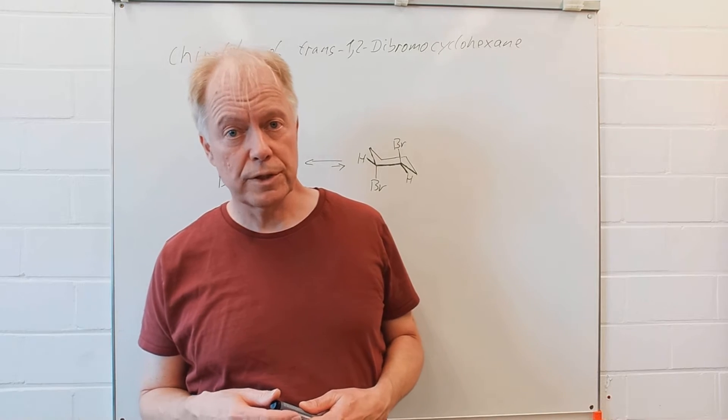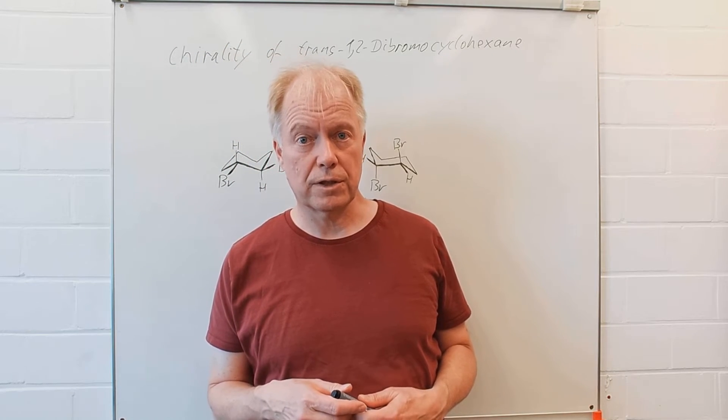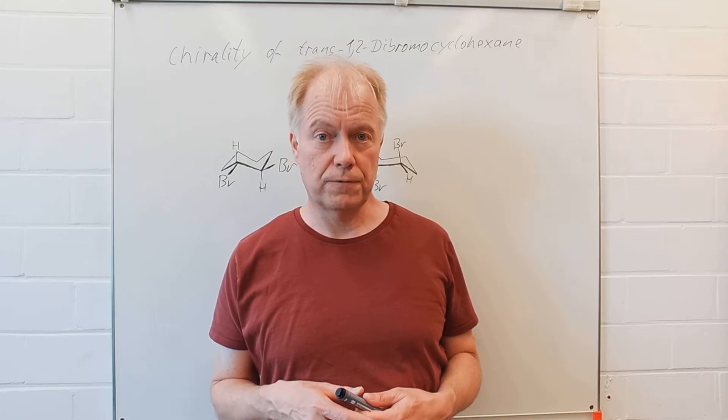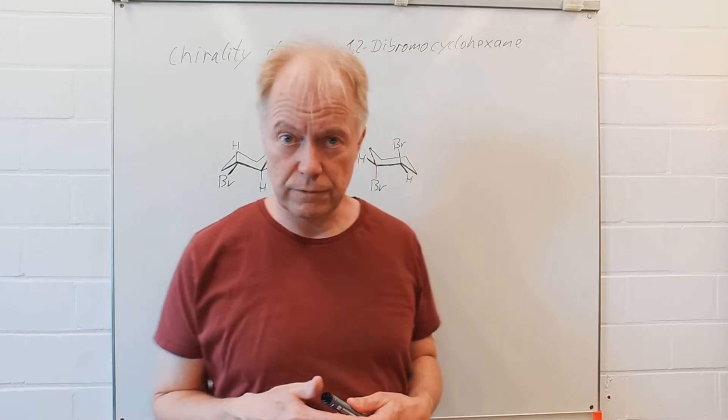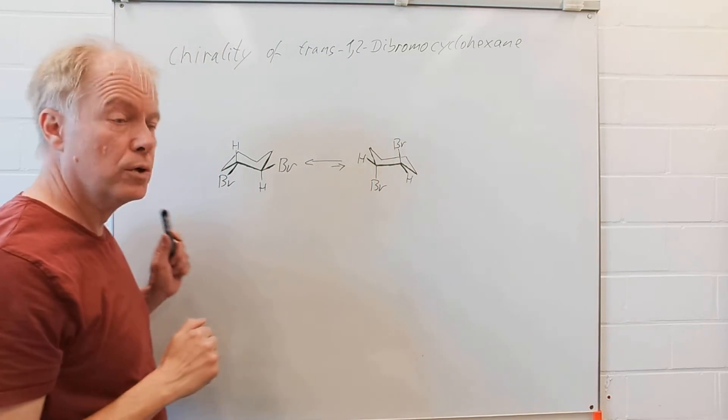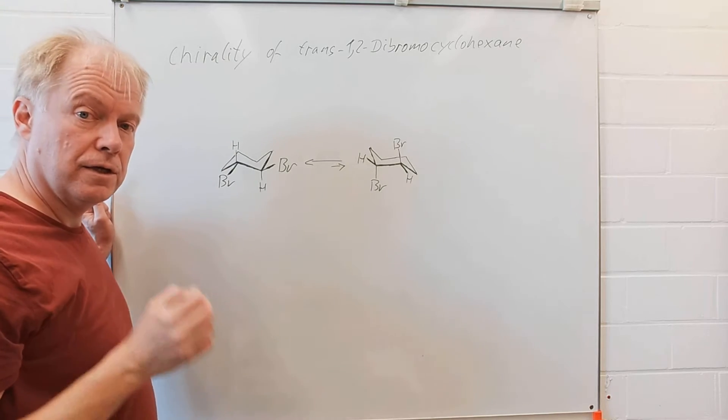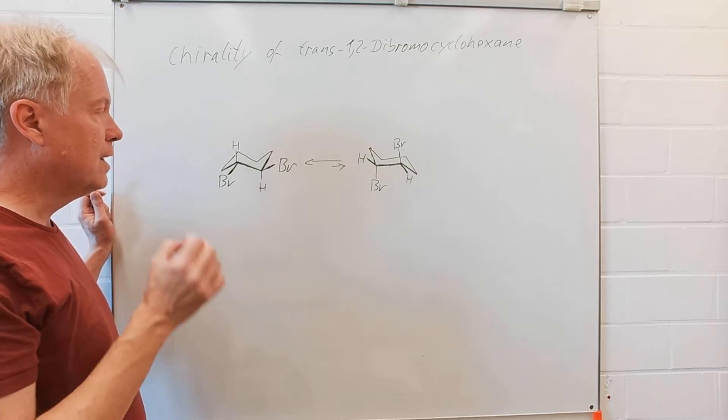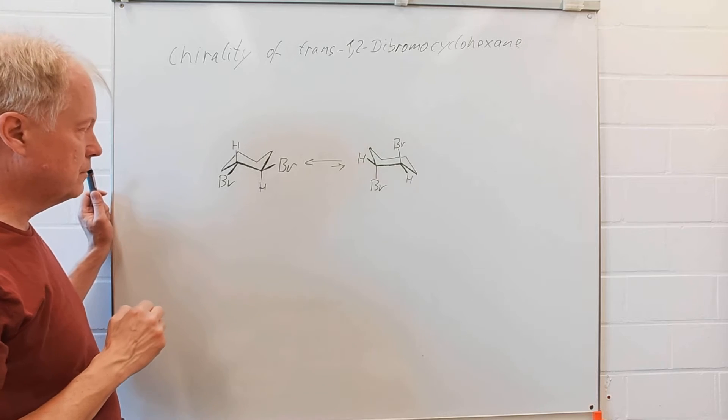In today's tutorial we have again a look at the conformers of cyclohexane derivative. In this case it's a trans-1,2-dibromo cyclohexane and this is interestingly a chiral compound as we will see.